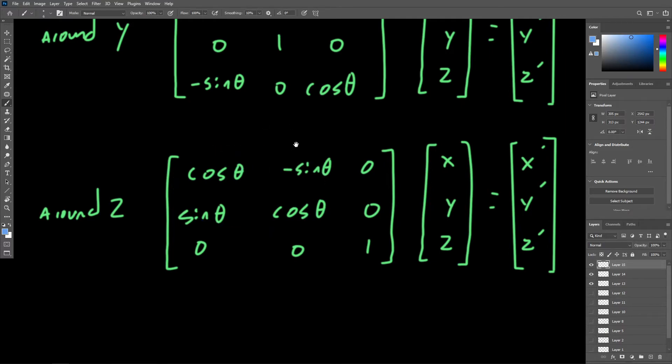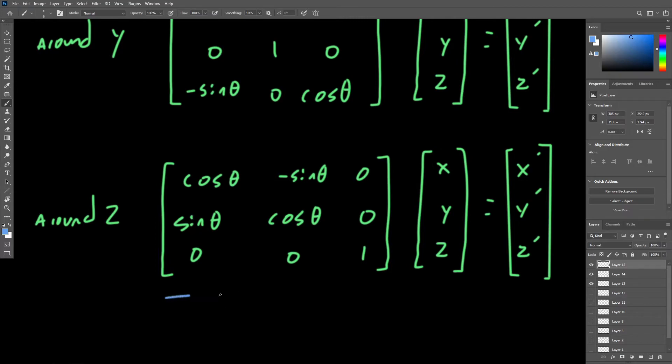And this should make sense, especially once we relate this back to the previous example we worked out using the linear combination for doing a rotation back in the matrices and transformations video. So let's actually keep this formula in mind and just head back to that drawing that we did to relate the two together.